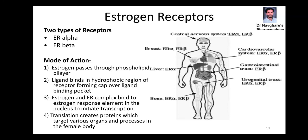There are certain estrogen receptors present in our body — basically two types: estrogen receptor alpha and estrogen receptor beta. This figure represents different locations of estrogen receptors: the central nervous system, breast, liver, bones, cardiovascular system, GI tract, and urogenital tract. Estrogen passes through the phospholipid bilayer and binds in the hydrophobic region of the receptor, forming a cap over the ligand binding pocket. The estrogen-receptor complex then binds to the estrogen response element in the nucleus, initiating transcription and translation, creating proteins used by different organs in the female body.